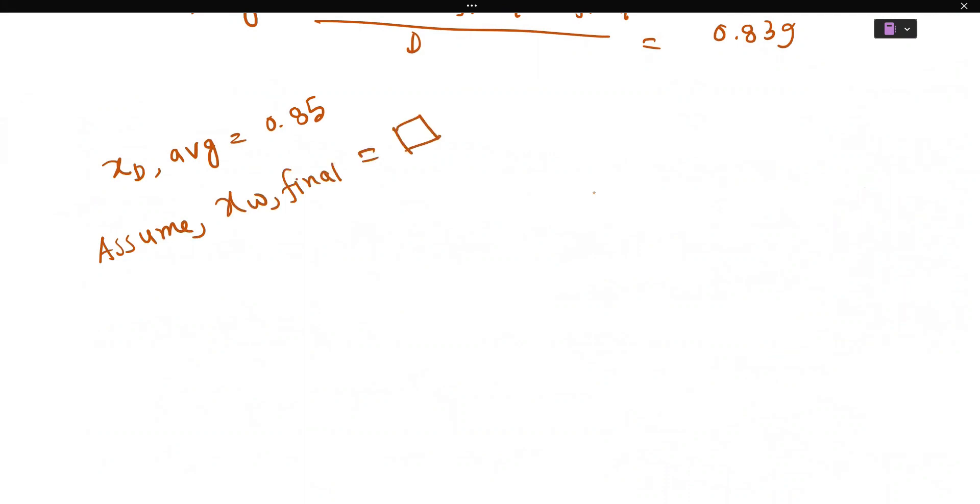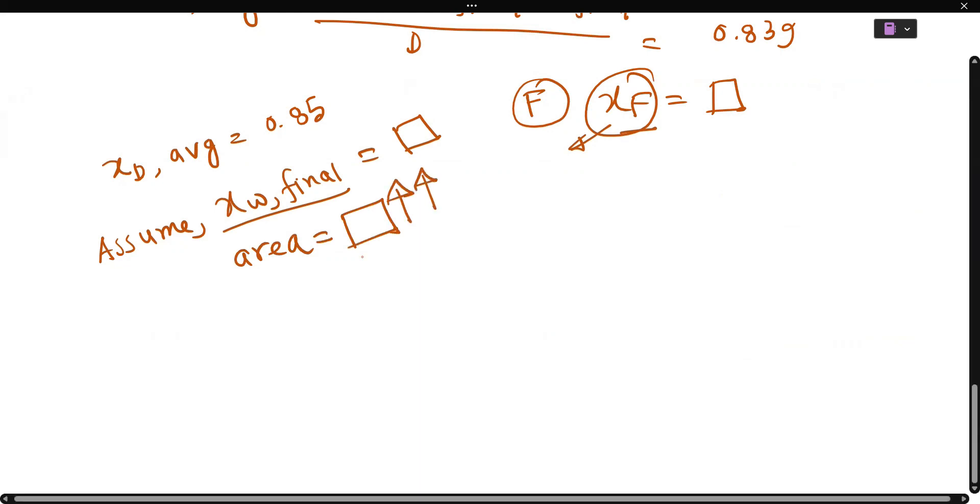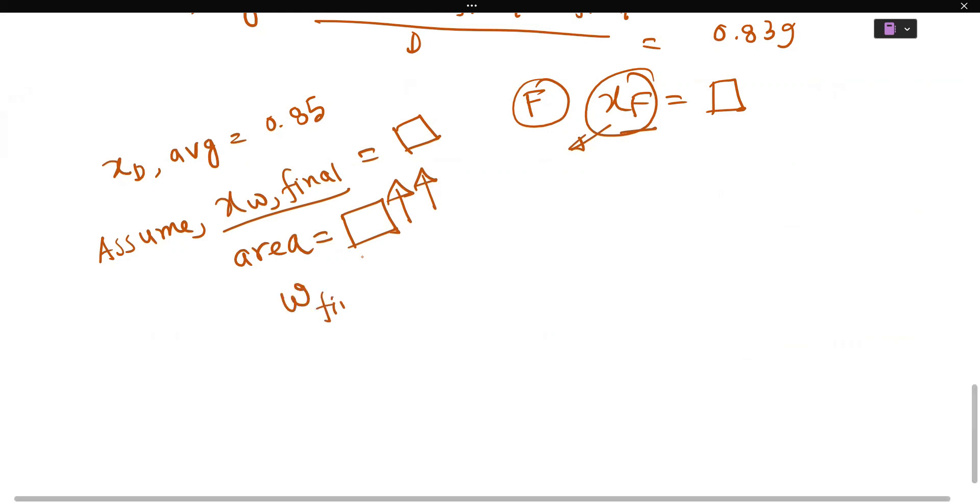What do you do? I will teach you the same procedure. This is if XD average is 0.85. You do the same procedure, but you assume XW final. You know XF. You can assume XW final area. Then you can use the equation.